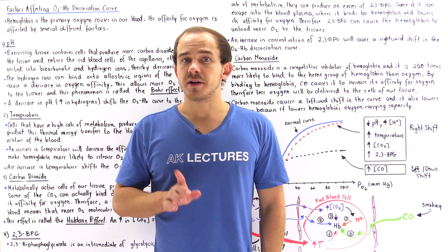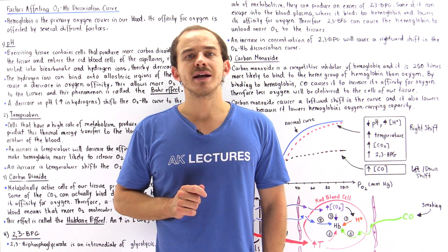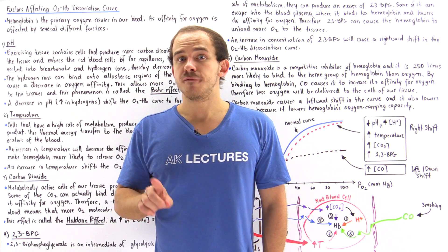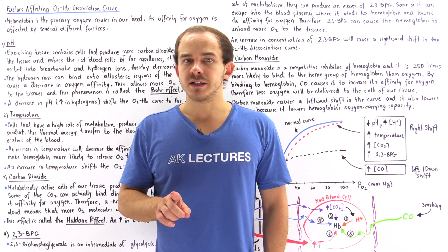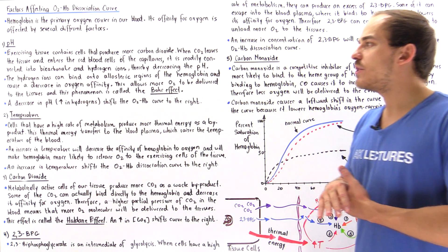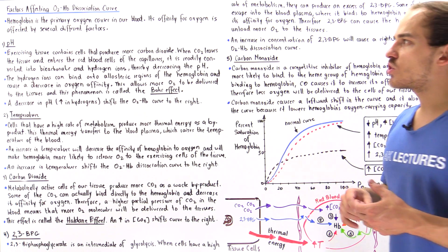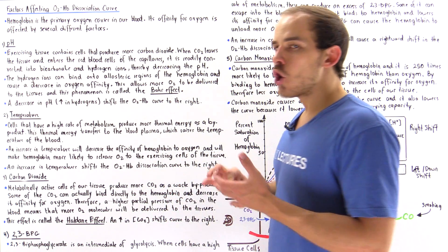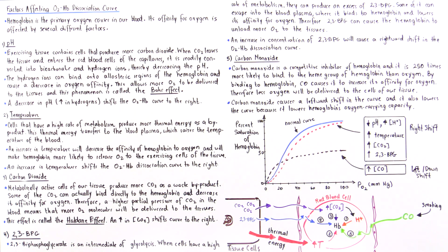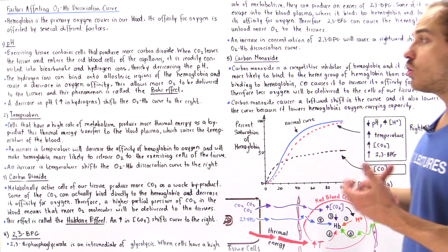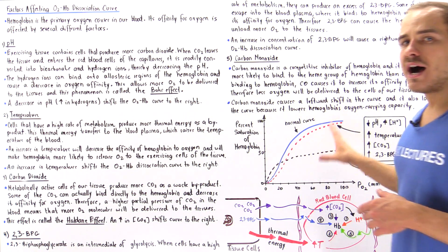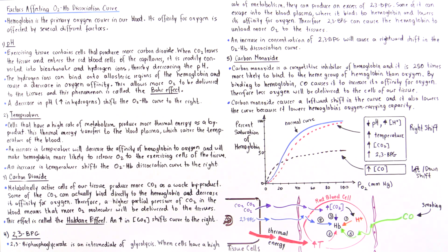Hemoglobin is the primary carrier of oxygen inside our blood system. The affinity of hemoglobin for oxygen can be affected by five different factors. We're going to examine pH, temperature, carbon dioxide, 2,3-biphosphoglycerate, as well as carbon monoxide. We're also going to discuss how these different factors affect the oxygen-hemoglobin dissociation curve.